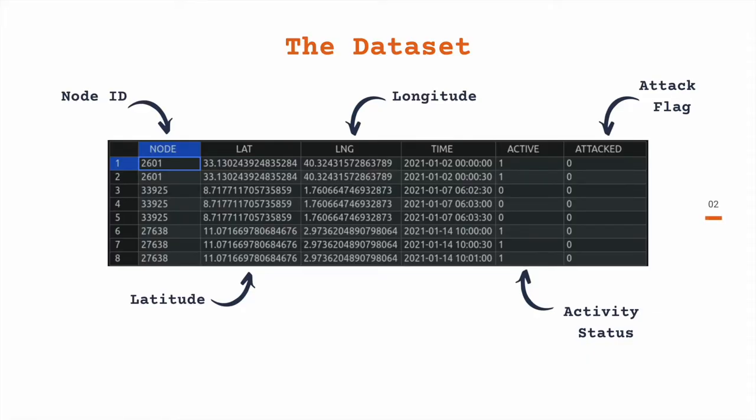This is how the columns and rows in the dataset look like. It consists of six different fields. The first one is Node ID, second and third consist of node location in terms of latitude and longitude, then followed by time of activity.